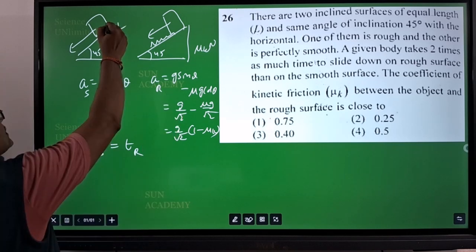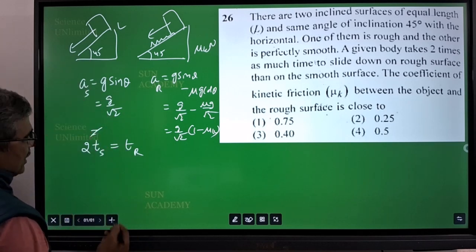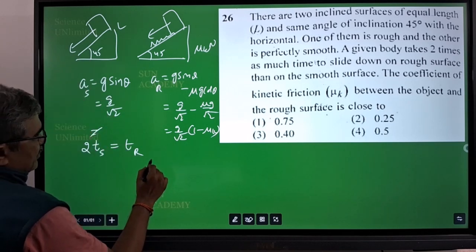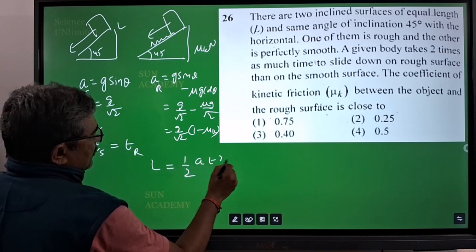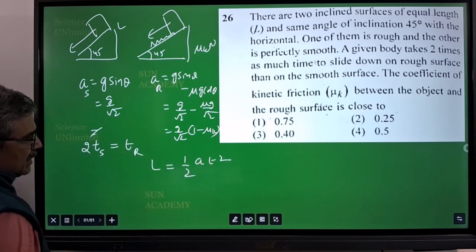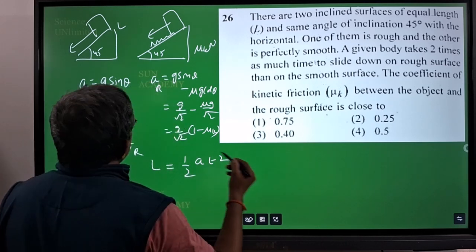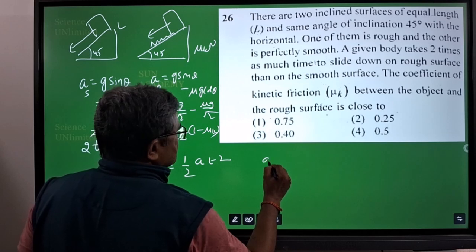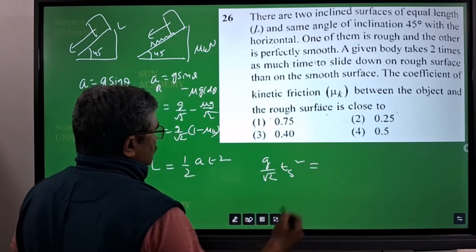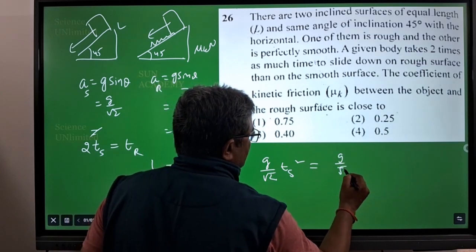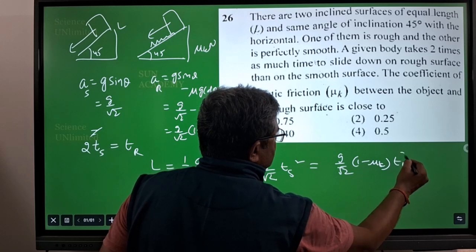We know that the distance travelled by the slide will be same as L only. If you get the expression from one dimension, the distance travelled by the block is L which is equal to half into a t square. In both cases I can write L is equal to, or you can equate both because length is same. I can write a t square: g by root 2 into ts square is equal to g by root 2 into (1 minus μk) into tr square.